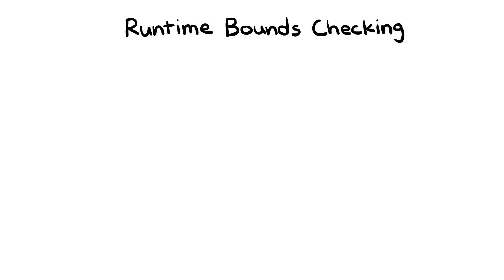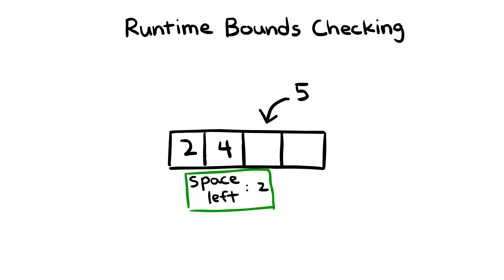With runtime bounds checking, every time we want to add a number to our array, there's code behind the scenes that checks if the array has enough room to fit our new number. If there's no room in the buffer, the insertion won't happen and an error will be reported.